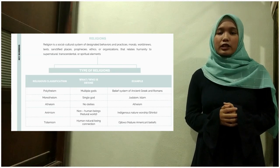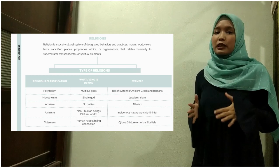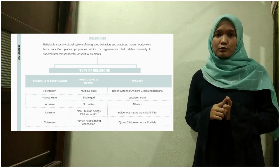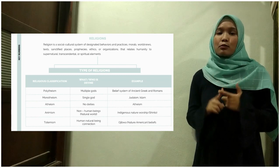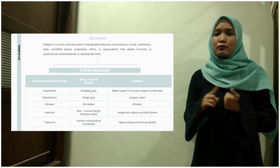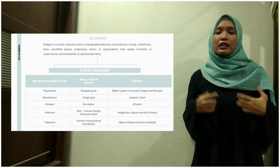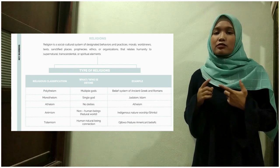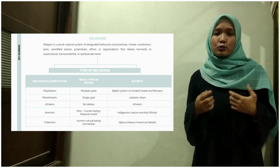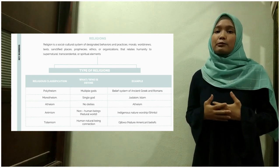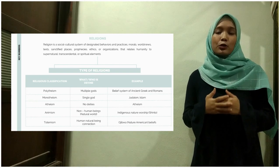Now we will discuss about religion. What is the actual meaning of religion? Religion is a social-cultural system of designated behavior and practices, morals, worldviews, texts, sanctified places, prophecies, ethics, or organizations that relates humanity to supernatural, transcendental, or spiritual elements. Basically, religion is a belief that we hold and practices that we apply in our life.